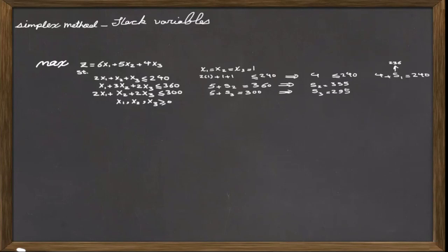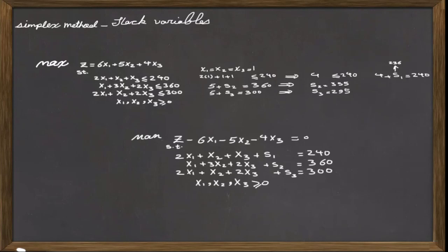Now that we have introduced the slack variables concept, we are ready to start the simplex method. But before starting the problem, we have to standardize the LP by bringing all the decision variables to the left-hand side and all the constant values to the right-hand side. For this problem, this is going to be the standardized form of the problem by adding the slack variables. Please note that for the objective function, we don't add any slack variables. We use the regular simplex method for problems where all constraints have a less than or equal sign. For problems containing greater than or equal or equal signs, we later introduce the big M or two-phase method. Please note that the index of slack variables represents the constraint number to which it is associated, but this is just a convention and not a rule, and it doesn't change any of the steps if you choose to select another name for your slack variables.